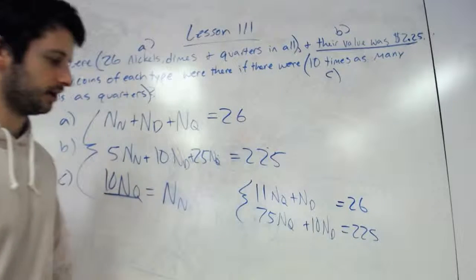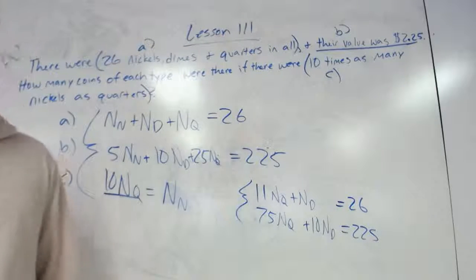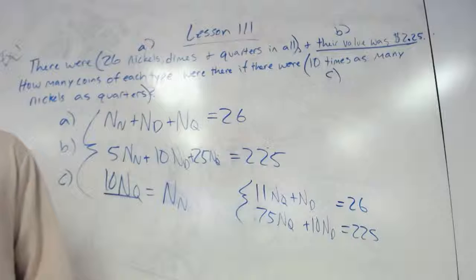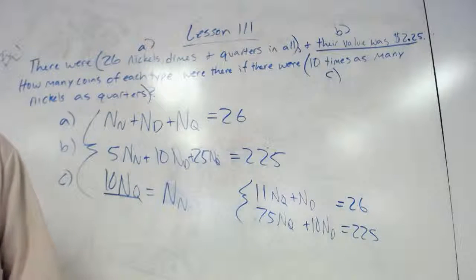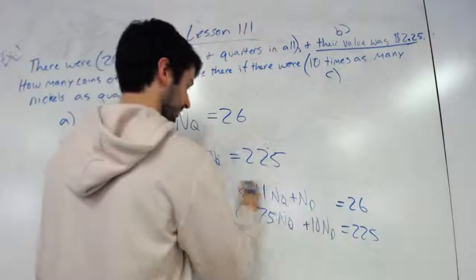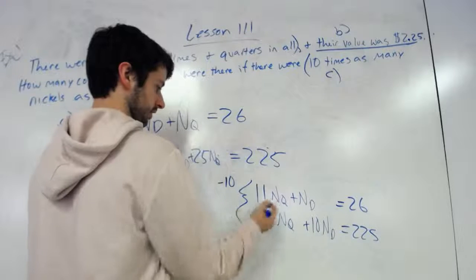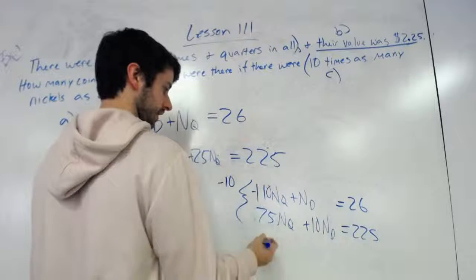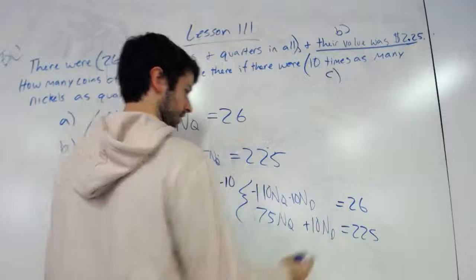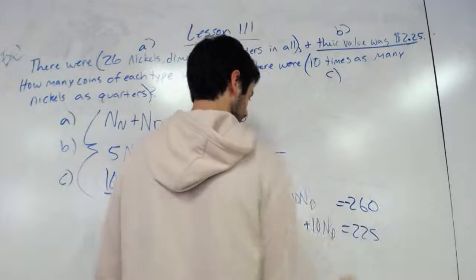And then however you want to go about solving from there, you can do substitution, elimination, whatever you want to do. So I'm going to multiply this by negative 10, so that would give me negative 10 there, negative 260 there.